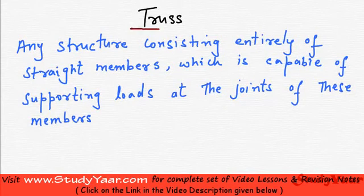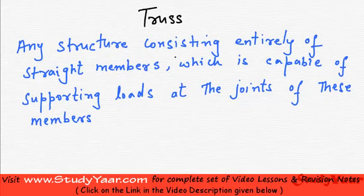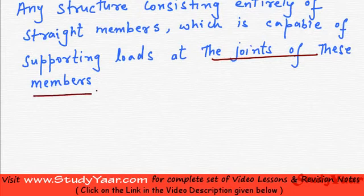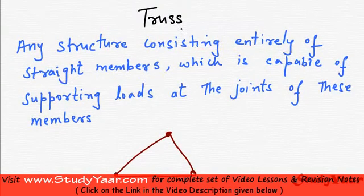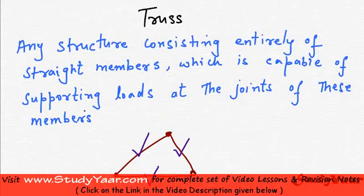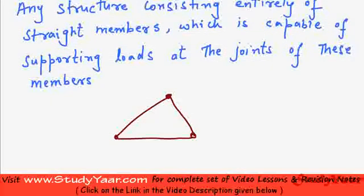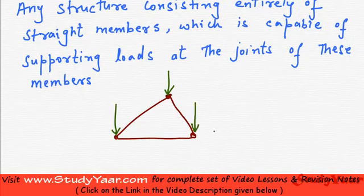A truss is defined as any structure consisting primarily of straight members that is capable of supporting loads at the joints of these members. So we are talking about a structure consisting entirely of straight members — this is a straight member, this is a straight member, this is a straight member — and which is able to support loads at the joints of these members. Such a structure is known as a truss.